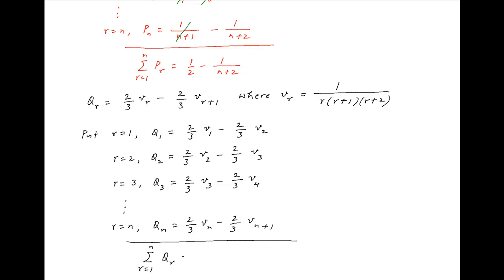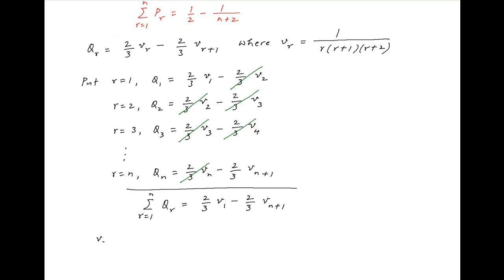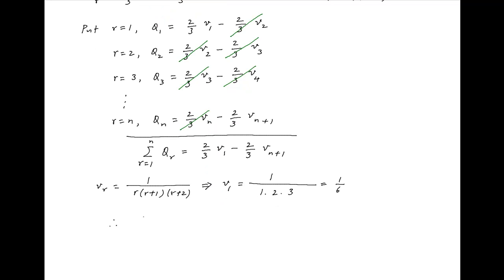Summing all these equations, on the left-hand side we get summation q_r. On the right-hand side, 2/3 · v_2 cancels with 2/3 · v_2 in the next row, 2/3 · v_3 cancels similarly, and so on, leaving only two terms: 2/3 · v_1 minus 2/3 · v_{n+1}. Since v_r = 1/[r(r+1)(r+2)], putting r = 1 gives v_1 = 1/6. Therefore, summation q_r from 1 to n equals 2/3 times (1/6 minus 1/[(n+1)(n+2)(n+3)]).